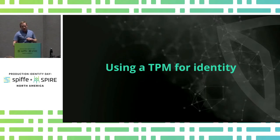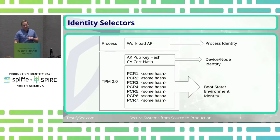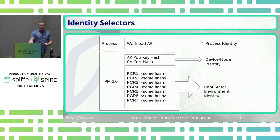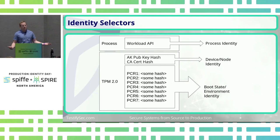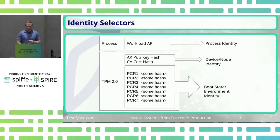So how do we use a TPM for identity? We have selectors that we can select identities on. With TPM 2.0, we have these PCR registers and a hash that identifies that system state. We also have the public key hash or the CA certificate hash. This TPM plugin was forked from Bloomberg to BoxBoat, and then we forked it from BoxBoat.